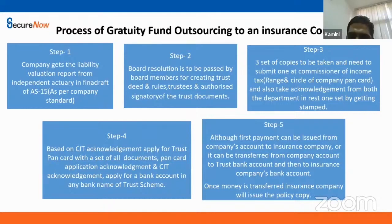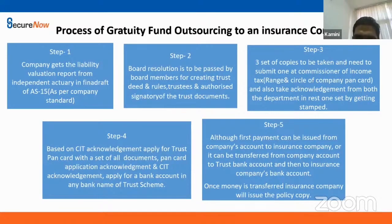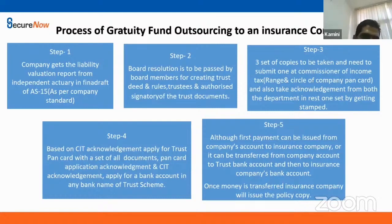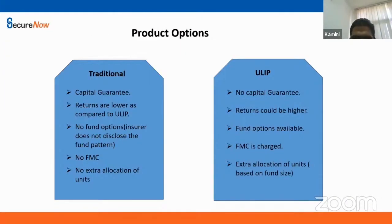Regarding the process of Gratuity fund management: the very first step is to create a trust. For creating a trust, the organization will have to pass a board resolution that, as a board, it has been decided to outsource the Gratuity to the fund manager. Once this board resolution is in place, the organization will also have to appoint trustees within the organization who are going to be managing the day-to-day activities of this trust. Once this is in place, the company will have to formally create a trust. Once the trust is created, it is filed with the Commissioner of Income Tax local office, which will give you the acknowledgement that they have received the document. The approval will eventually come over a period of time, but as an organization, you are good to go and outsource your Gratuity liability to an insurance plan.